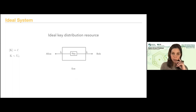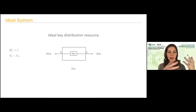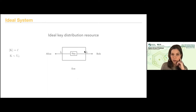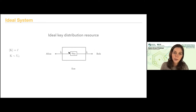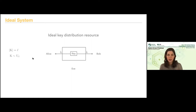What is the ideal key distribution resource? In abstract cryptography everything is represented with abstract figures. I have a box with several interfaces for Alice, Bob and Eve. In the ideal case, we just want a key to be produced and sent to Alice and Bob — the same key to both. We don't want Eve to know anything about it, except perhaps the size of the key. The key will be L bits, uniformly distributed. This is an ideal key distribution resource.